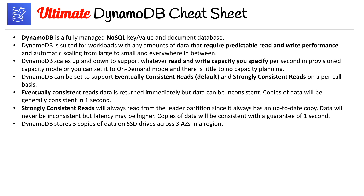DynamoDB stores three copies of data on SSD drives across three availability zones in a region. I previously said across three regions, but this was my misinterpretation of the documentation. DynamoDB's most common data types are B (binary), N (number), and S (string) — there are a few other ones, some starting with B, which can be a bit confusing, but these are the three key ones to know.